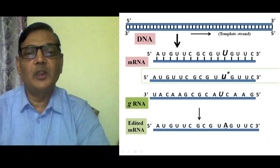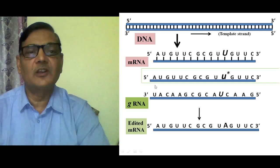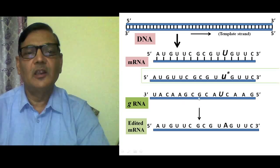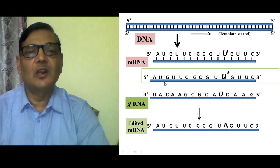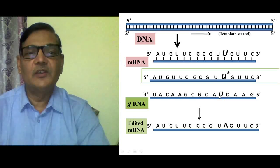A kind of substitution editing has to occur here, so this U needs replacement — a change from U to A. For this change, a guide RNA is required along with several enzymes that assist in cutting, removing the nucleotide, and adding the required one. The guide RNA contains complementary base sequences that will match with the messenger RNA.